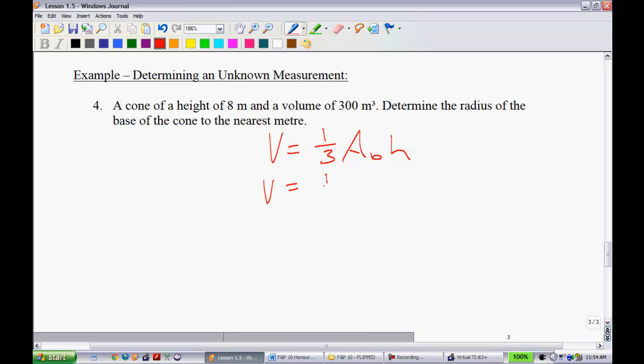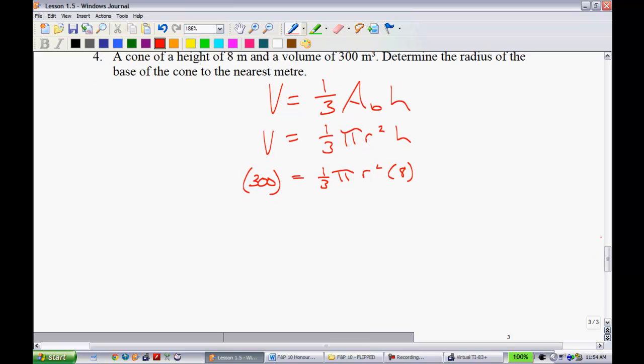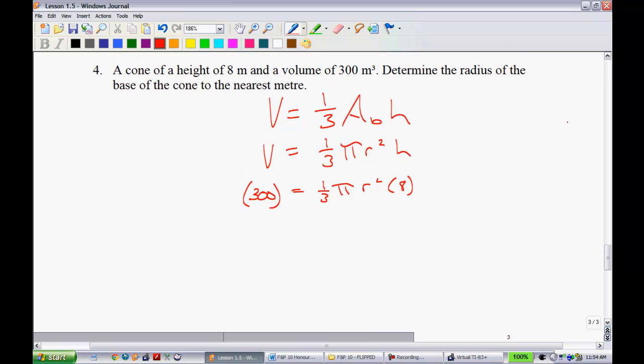I still like to start with my equation. Volume equals one-third the area of the base times the height. If you want to even go one further, you can write out what the area of the base is. Of course, it's pi r squared h. Now we can start substituting in. They tell you the volume was 300, so we can put that in. Substitute with brackets to let me know what's going on. The radius, well, we don't know what the radius is. That's what we're trying to figure out. So we'll just leave that as r squared. And we have a height of 8. If you haven't noticed why this question is a little bit more difficult, it's because you're going backwards. They give you the volume and they're looking for one of the dimensions.